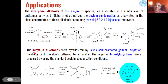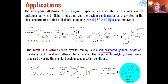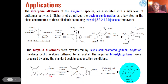Another application of acyloin condensation is the synthesis of bicyclic diketones, which are very important biologically active compounds. These can be synthesized by Lewis acid-promoted germinal acylation involving cyclic acyl ions, and these cyclic acyl ions are synthesized through acyloin condensation reactions of diesters. Since 1,4-diesters are used, they are converted into 4-membered cyclic ring butenes, and these react further with Lewis acid.